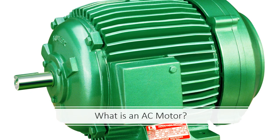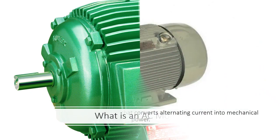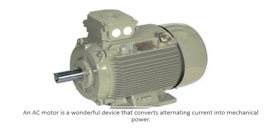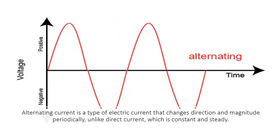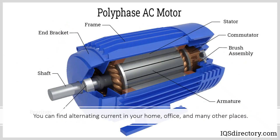An AC motor is a wonderful device that converts alternating current into mechanical power. Alternating current is a type of electric current that changes direction and magnitude periodically, unlike direct current, which is constant and steady. You can find alternating current in your home, office, and many other places.